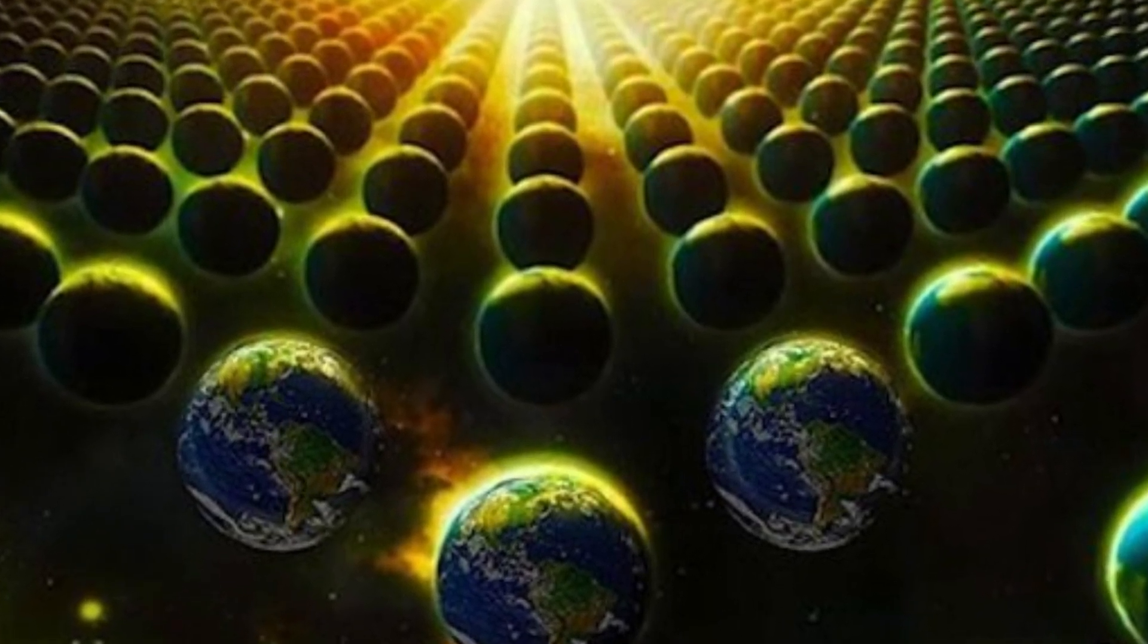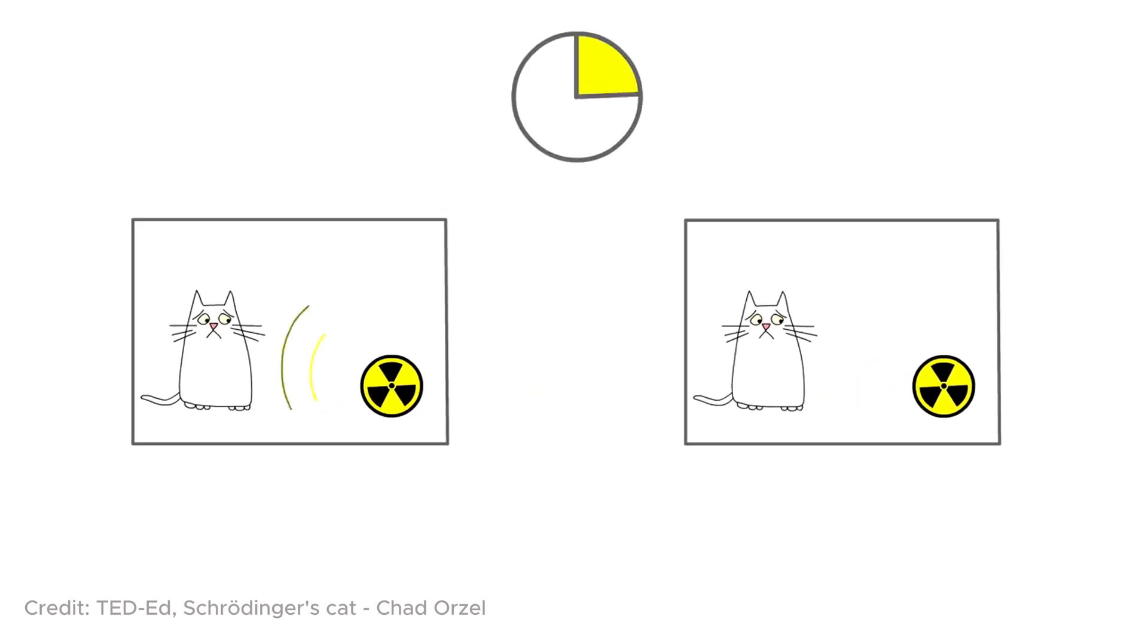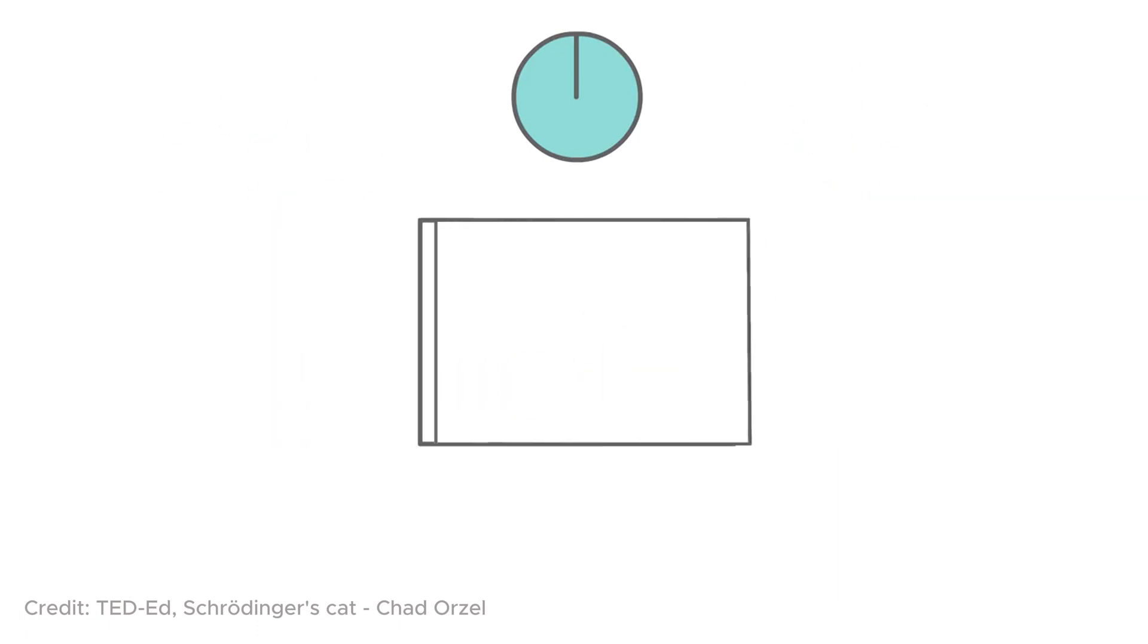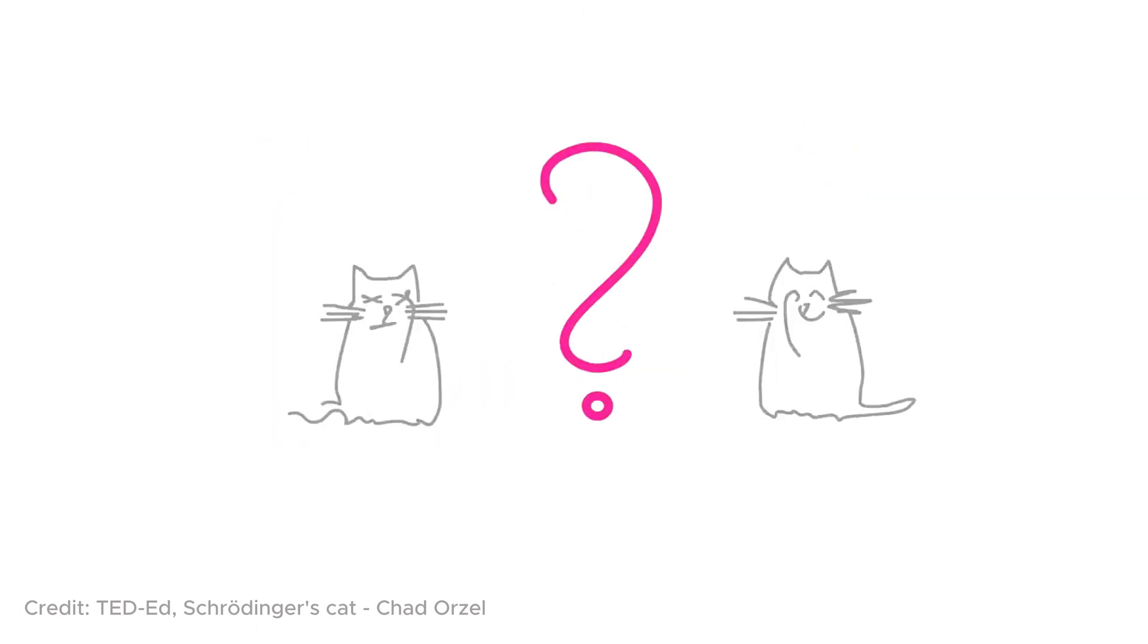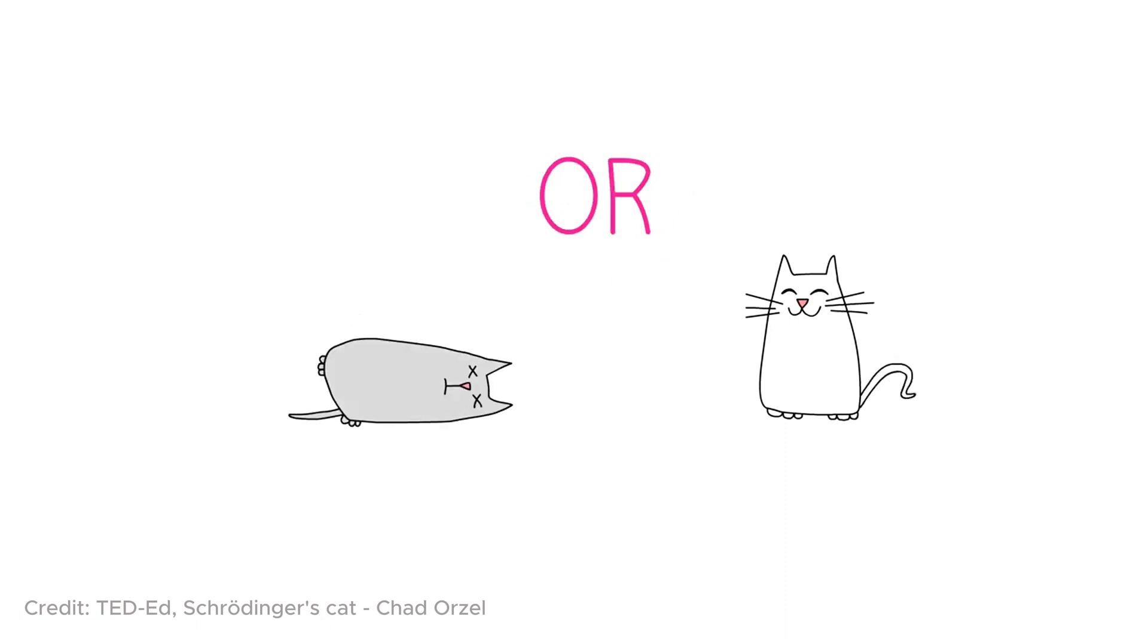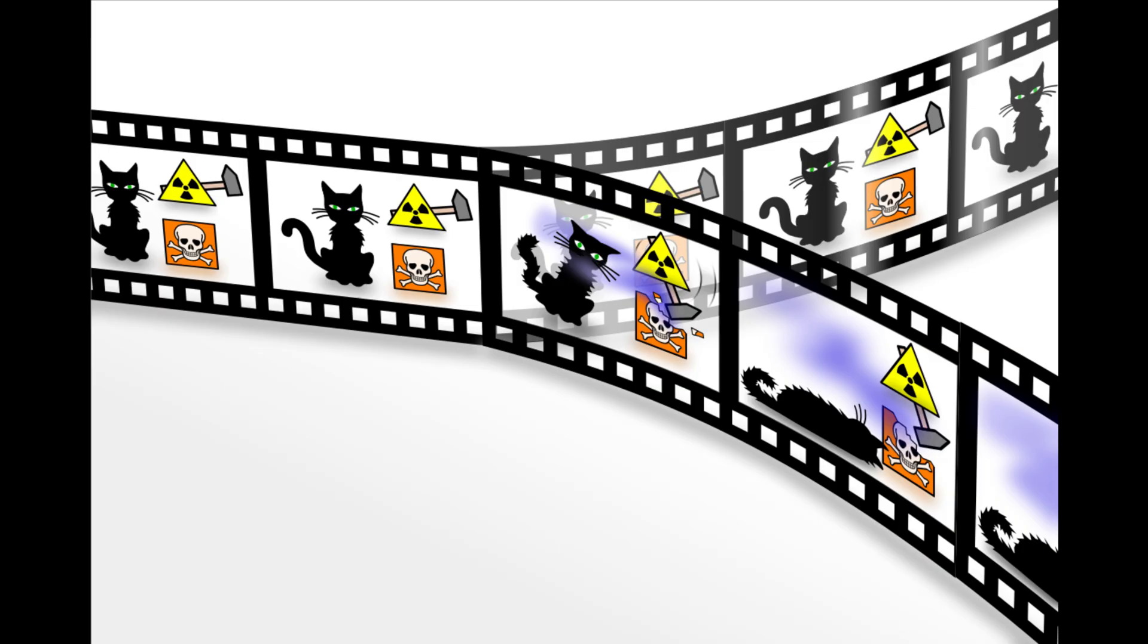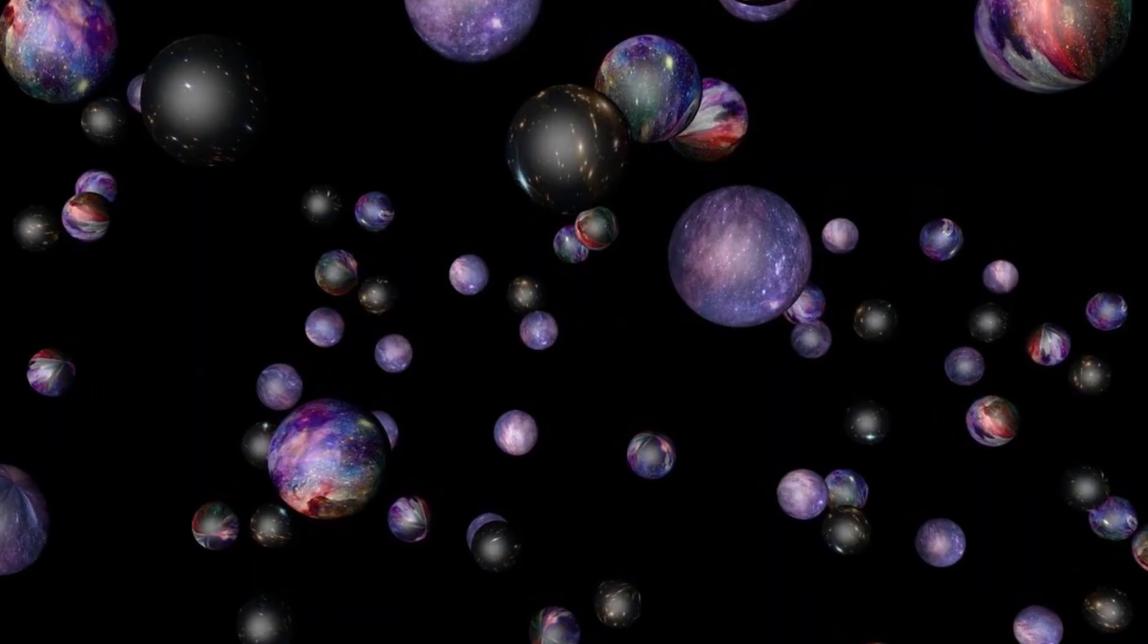If we recall the famous thought experiment about Schrodinger's cat, I'll briefly remind you of it. In Schrodinger's thought experiment, a cat is placed in a closed container along with a vial of poison, which can be broken by a radioactive element with a half-life. According to the principles of quantum mechanics, until the container is opened by an observer, the cat is in a state of superposition, where it is simultaneously alive and dead until measurement. It turns out that in one world, the cat is dead, and in another world, the cat is alive. These two worlds objectively exist, but are not connected to each other.